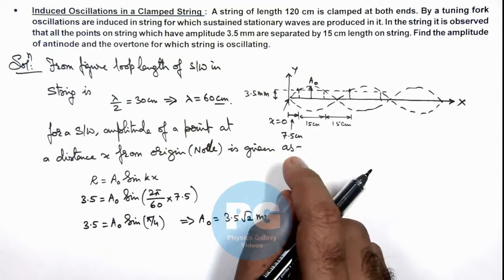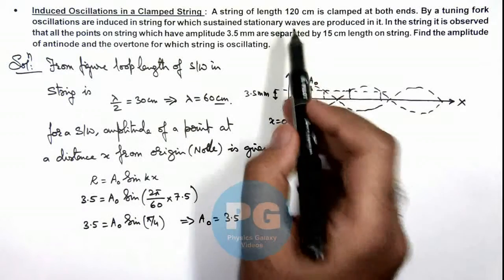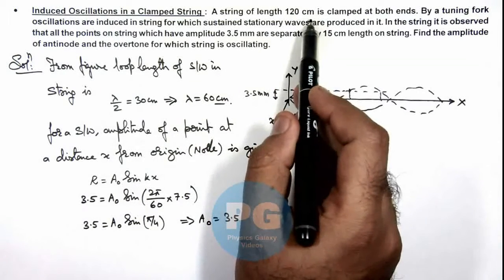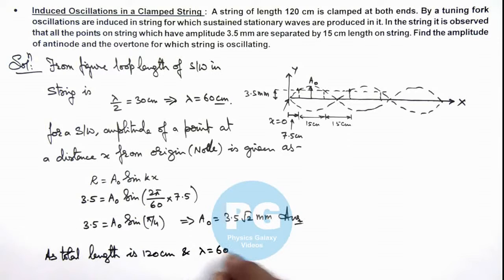And if we are required to find the overtone for which the string is oscillating, we are given the total length of string is 120 centimeters. We can write total length is 120 centimeters and λ is 60 centimeters.